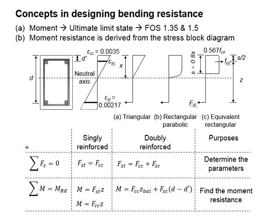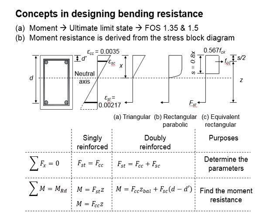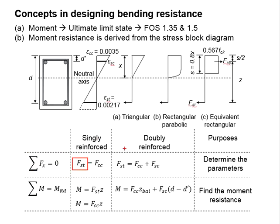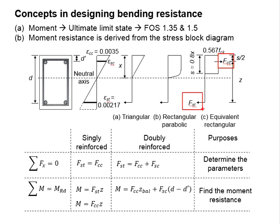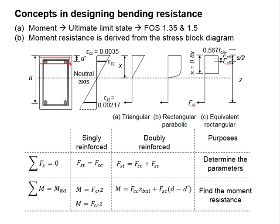The second concept: the moment resistance is derived from the stress block diagram, worked on the basis of two equations — sigma fx equals zero, and then determining the total moment. For a typical singly reinforced concrete section, there is no compression steel bar. Using the principles of static equilibrium, the total force in the steel bar shall equal the force in the concrete stress block. You can then use either force multiplied by the lever arm to get the moment resistance of the section.